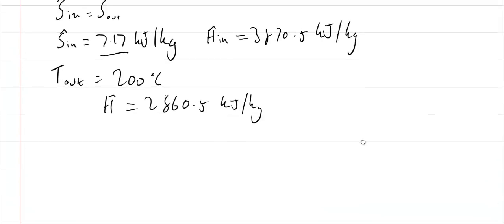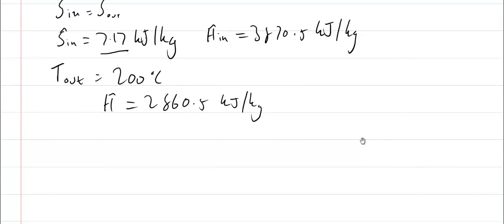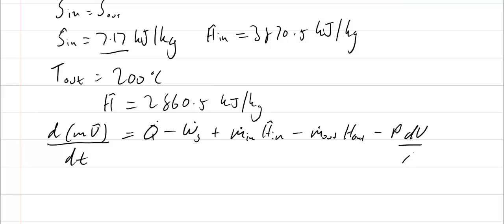Now I go back to my energy balance for this system. dmu/dt equals q dot minus my work plus m_in h_in minus m_out h_out minus p dv/dt. I know my system's at steady state so nothing changes with time, so I can get rid of those varying with time terms.